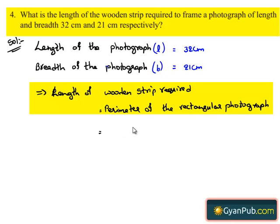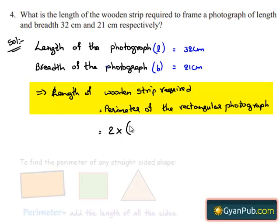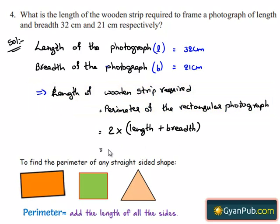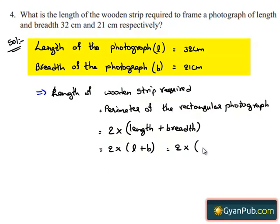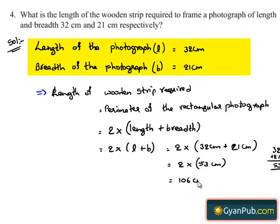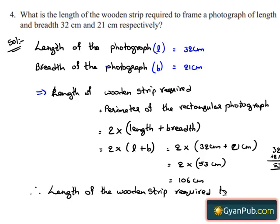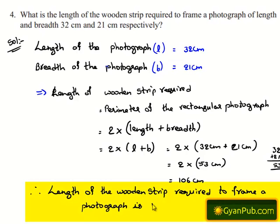The perimeter is the distance covered along the boundary forming a closed figure when you go around the figure once. The perimeter of a rectangle is 2 times the sum of length and breadth. This is equal to 2 times (L + B) = 2 times (32 cm + 21 cm) = 2 times 53 cm = 106 cm. Therefore, the length of the wooden strip required to frame the photograph is 106 cm.